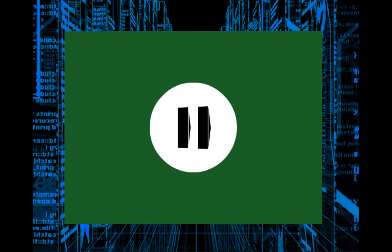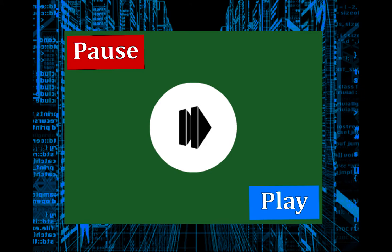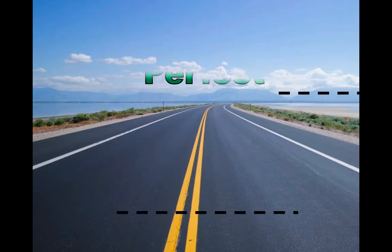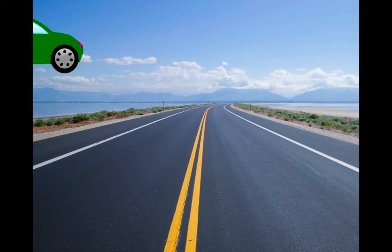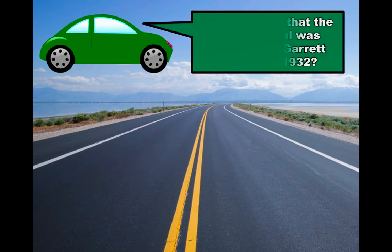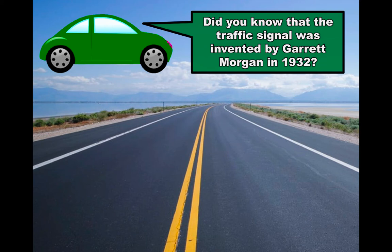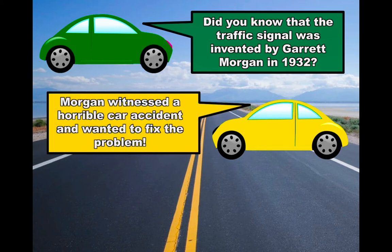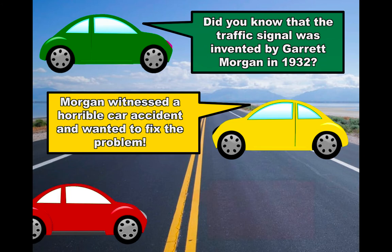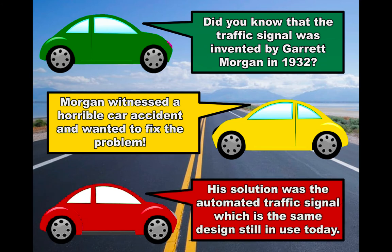Don't forget, you may pause this video anytime to complete any required assignments. Here is an example of a perfect paragraph using the color-coded Traffic Signal System. Green topic sentence: Did you know that the traffic signal was invented by Garrett Morgan in 1932? Yellow supporting sentences: Morgan witnessed a horrible car accident and wanted to fix the problem. Red ending sentence: His solution was the automated traffic signal, which is the same design still in use today.